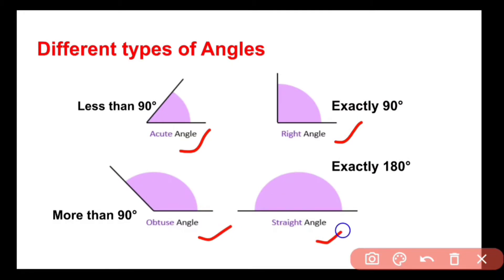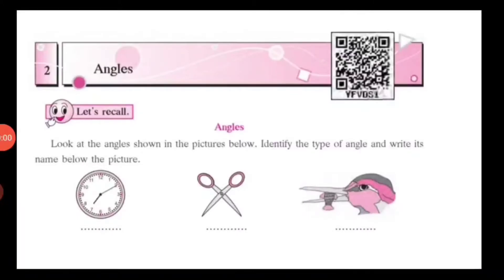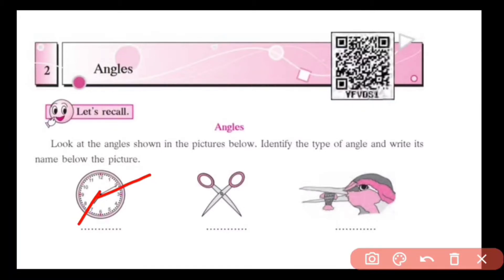There is an activity at the beginning of the chapter: look at the angles shown in the pictures below, identify the type of angle, and write its name. In the first picture we can see a clock. There are two hands — a minute hand and an hour hand — and there is an angle between them. Because the hands are going away from each other, the angle between them must be greater than 90 degrees, so it is an obtuse angle.